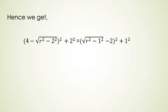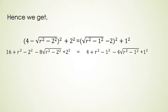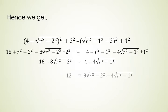Hence we get this equation over here. Now on further solving and simplifying we get 16 minus 8 under root R square minus 2 square is equal to 4 minus 4 under root R square minus 1 square. Now again solving this more and squaring both sides we get this equation over here.